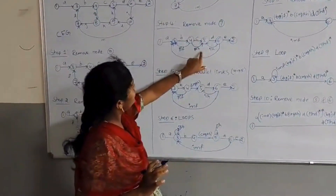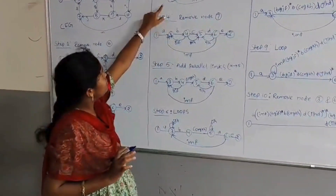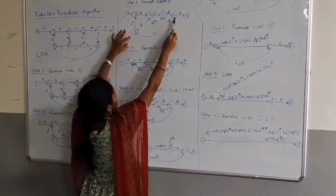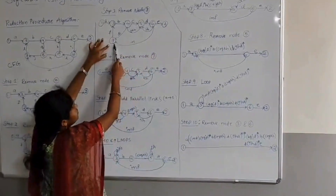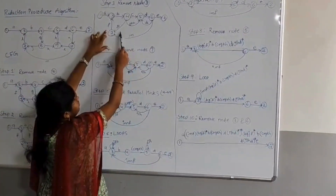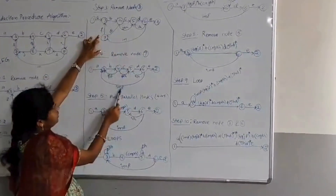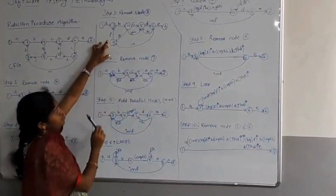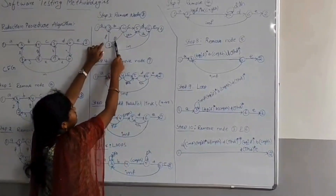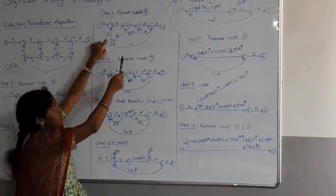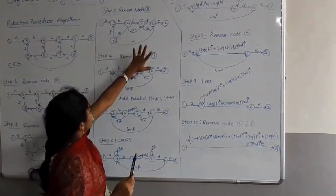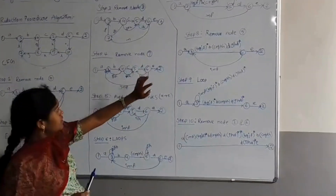Now I am going to remove the 7th node. By removing the 7th node, I need to check what connections exist. From 6 to 7 and 7 to 3 there is a link — these are in serial, so we multiply IM × F to get IMF as the link weight from 6 to 3. Next, 4 to 7 and 7 to 3 also have a link — multiplying GJ × F gives GJF as the link weight from 4 to 3. This is the flow graph after removing the 7th node.